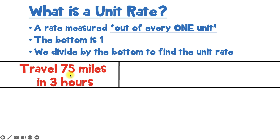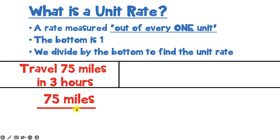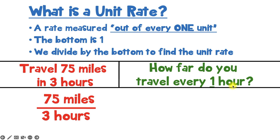Let's say we have this here. This rate says you can travel 75 miles in three hours. This is usually how a rate will appear in a word problem. But when you're using calculations, you're more likely to use it as a fraction, and that would look like this — with the 75 miles on top of the three hours. So this is a rate, but we're looking for a unit rate. The question we're asking is: how far do you travel in every one hour? In order to find the unit rate, we're going to have to divide by the bottom value, and that's the number three.